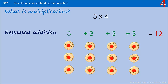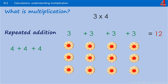We can also look at how many lots of 4 we have. So there's 1 lot of 4, there's another lot of 4 and another lot of 4. So we have 3 lots of 4, or 4 lots of 3. Either way we have 12 biscuits.